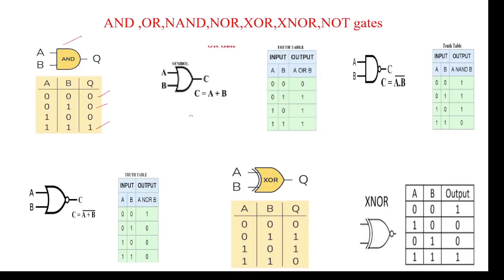This is the OR gate symbol. For the OR gate: 0+0=0, 0+1=1, 1+0=1, 1+1=1. Coming to the NAND gate — this is the NAND gate symbol.